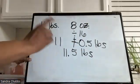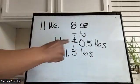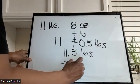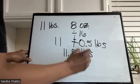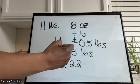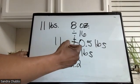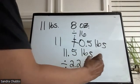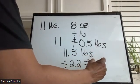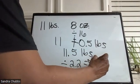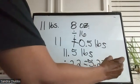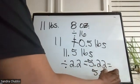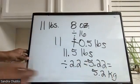Now we can convert the pounds to kilograms by dividing by 2.2. You always round your kilograms to the nearest tenth. So 11.5 divided by 2.2 gives us 5.22. Rounded to the nearest tenth, 5.2 kilograms is the answer.